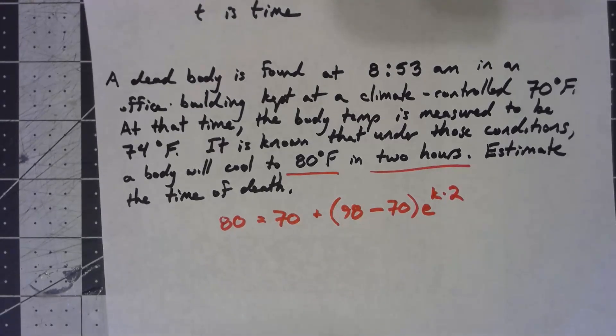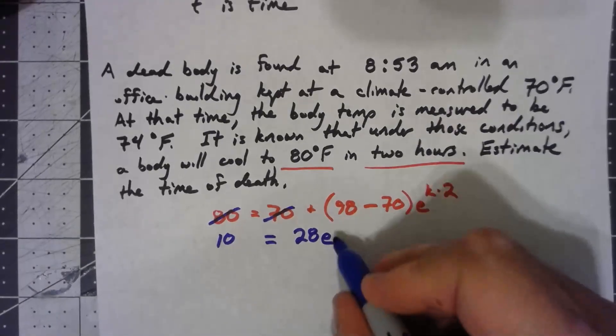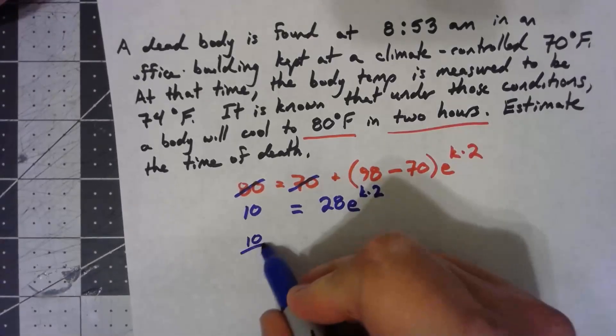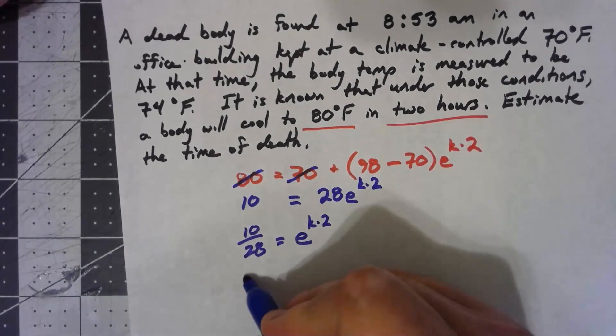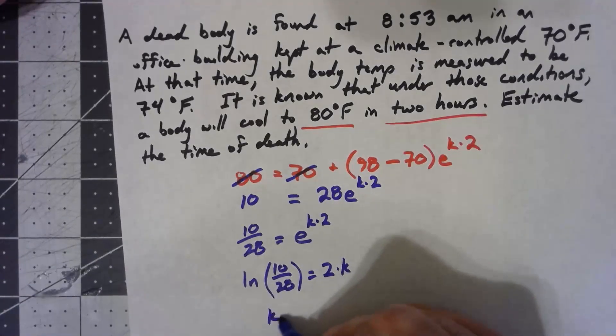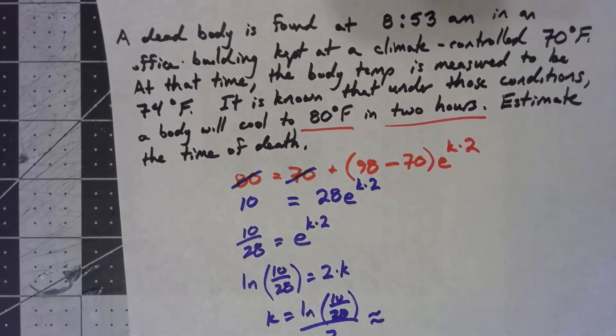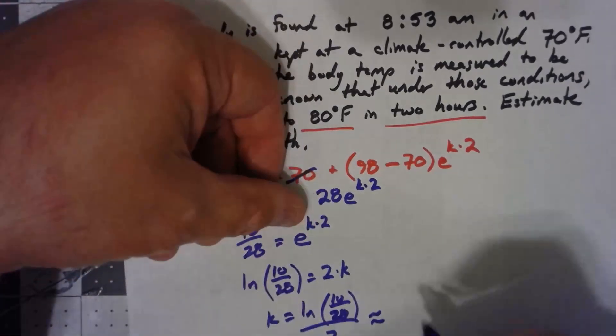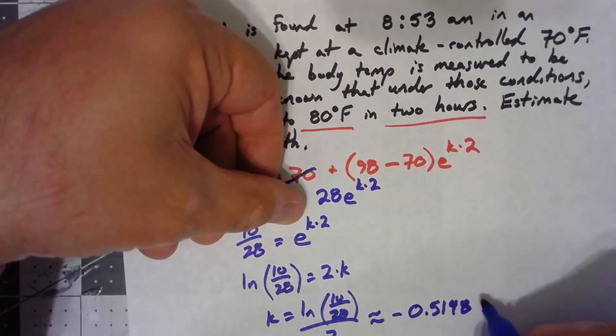Simplifying this, subtract 70 from both sides. So 10 equals 28 e to the K times 2. Divide by 28, so 10/28 equals e to the 2k. Take the ln of both sides, ln(10/28) equals 2k, and then divide by 2. Give me a second to plug it into a calculator. It comes out to be negative 0.51480097.